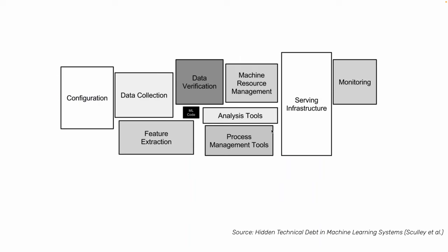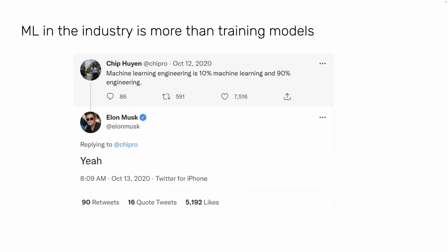Your ML code — whatever machine learning model you build — is just 20% of your whole machine learning project or business problem. There are many other things that come into place, and your machine learning code is only 20% of the whole set. ML in industry is more than training models, as validated by Chip Huyen, one of the experts in MLOps. It is also validated by Elon Musk, who said machine learning engineering is just 10% machine learning and 90% engineering.